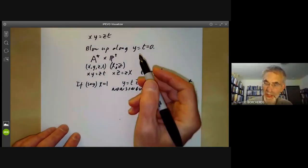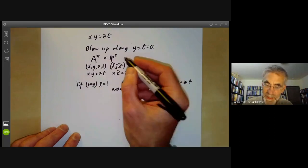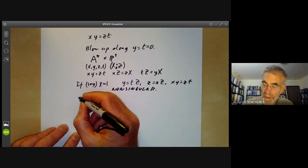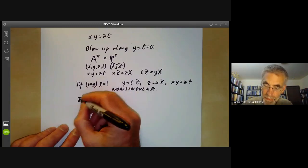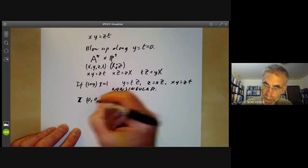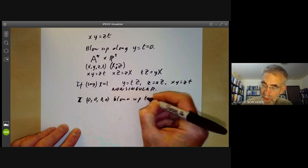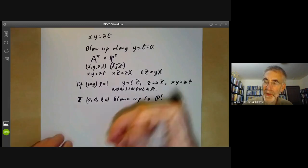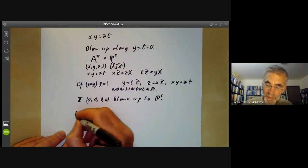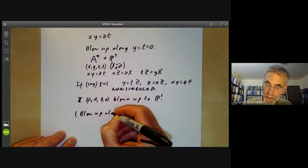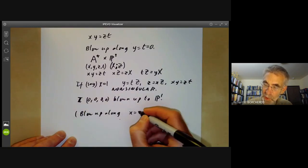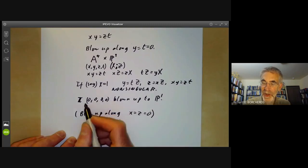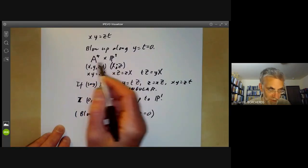This time, the inverse image of the point zero is blown up to a copy of P1 rather than P1 times P1 as we had earlier. Instead of blowing up along the line y = z = 0, we could also blow up along the line x = z = 0, and we just switch y, t and x, z. So we would find another way of resolving this singularity by blowing up the origin to a line.